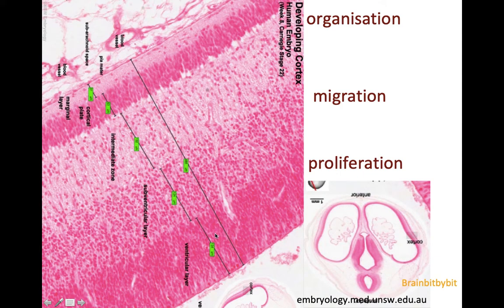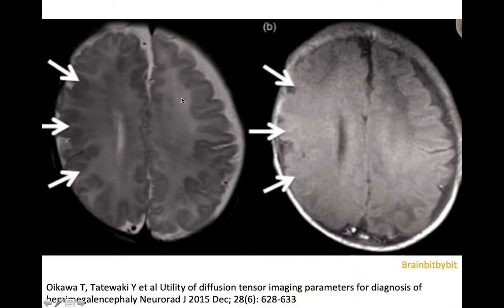What happens in the ventricular layer? There is too much proliferation, producing too many large neurons and glial cells. This abundance of abnormally large neurons and glial cells migrates to the cortex and gives overgrowth of usually one hemisphere.